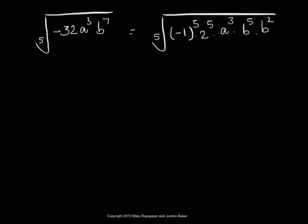And that would give you fifth root of fifth power of negative 1 will give just negative 1. Same way, fifth root of fifth power of 2 will give you 2.